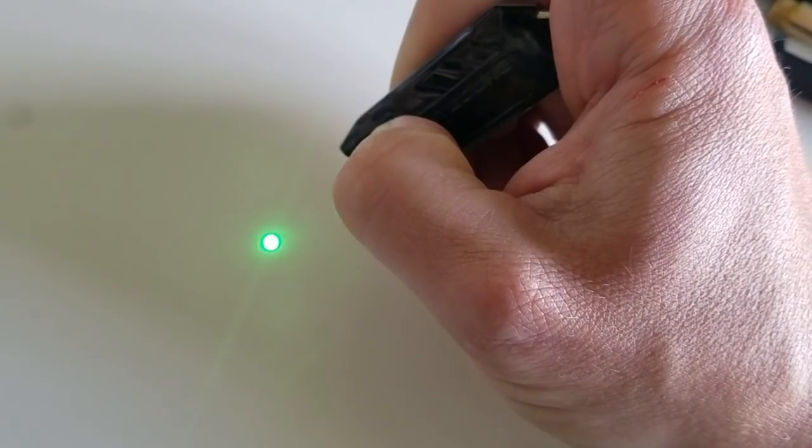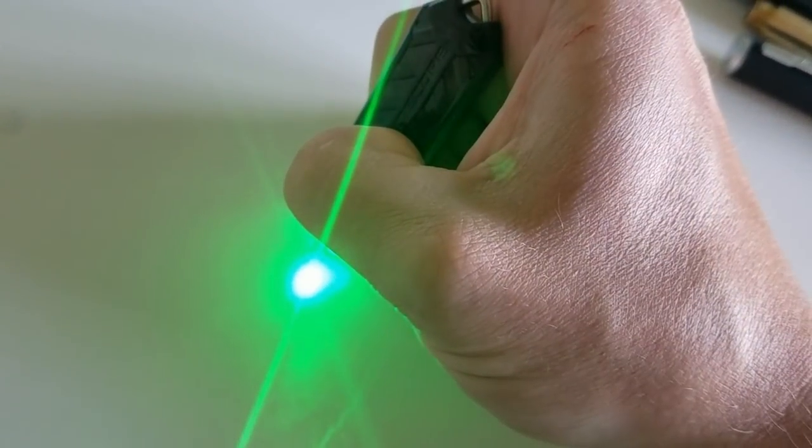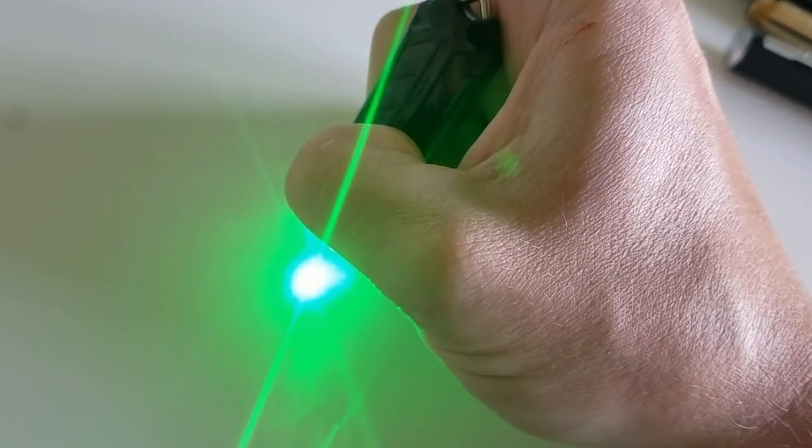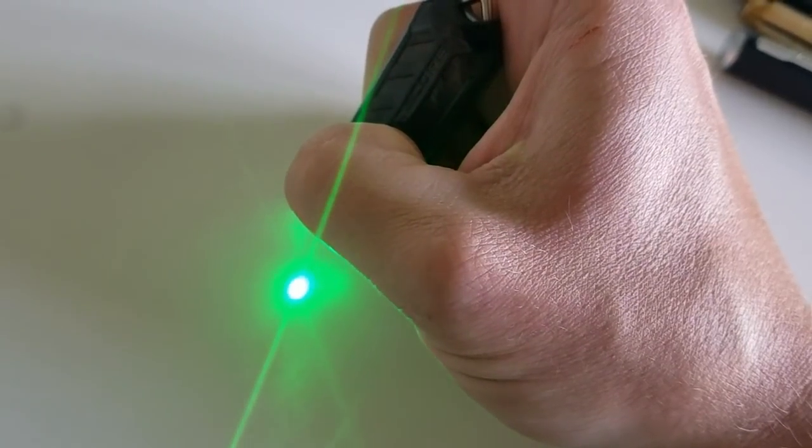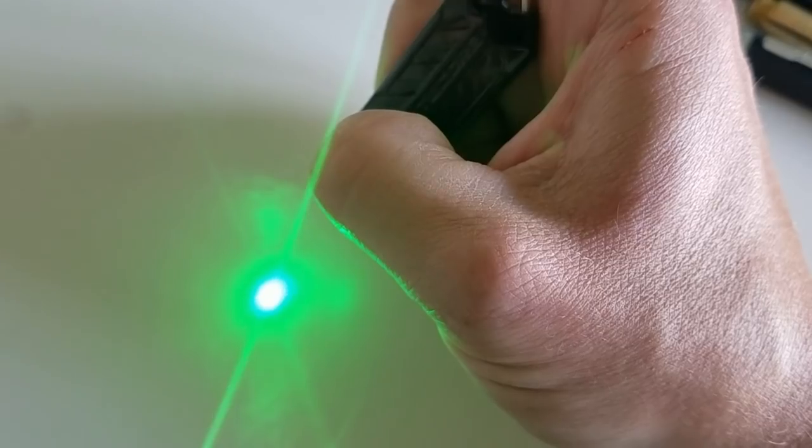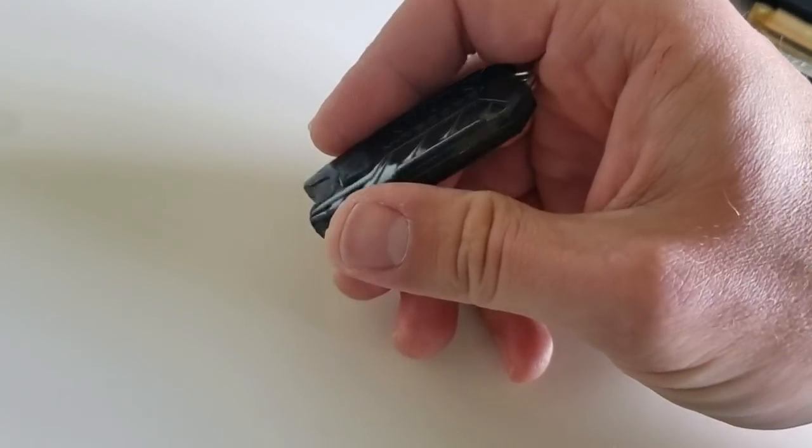So now I'm in the adjustment mode, and it's ramping up and down, and you can see the green indicator inside the body there blinking when I get to the maximum and minimum power levels. And I can stop where I want, and that is saved.